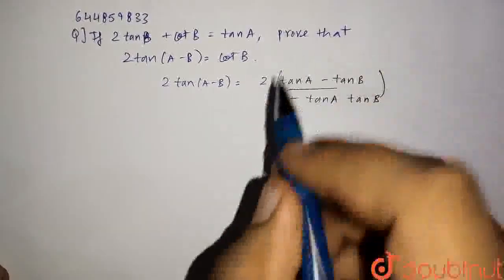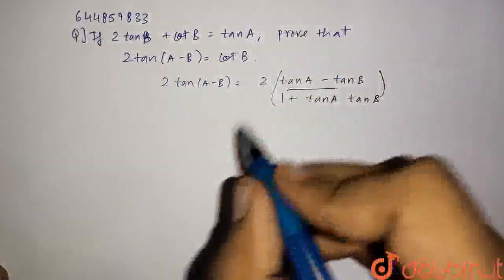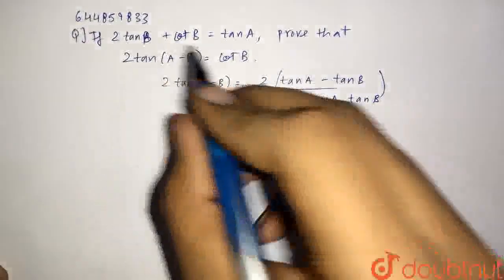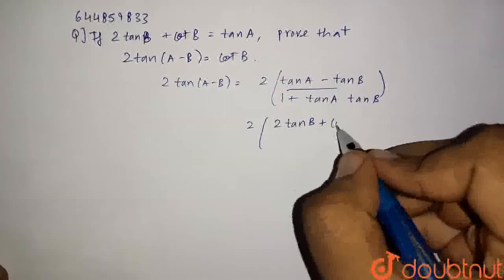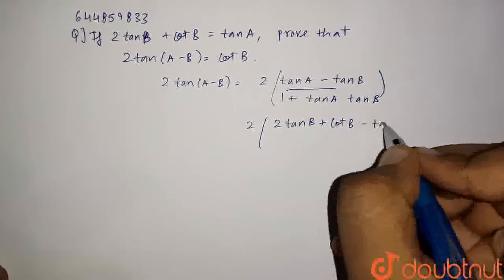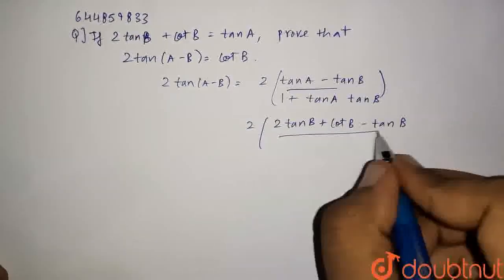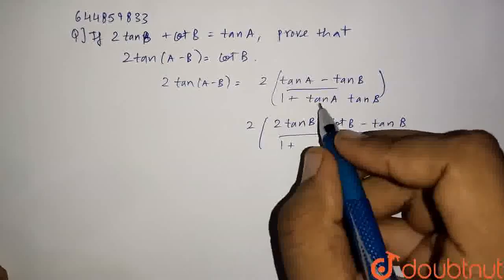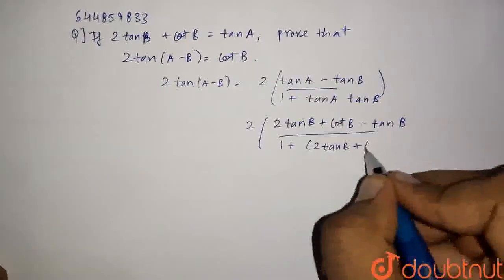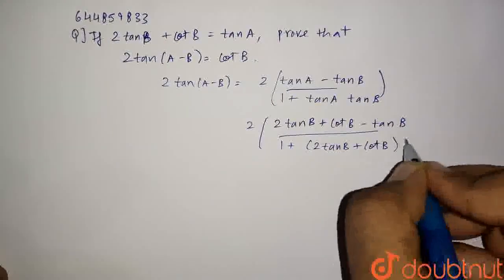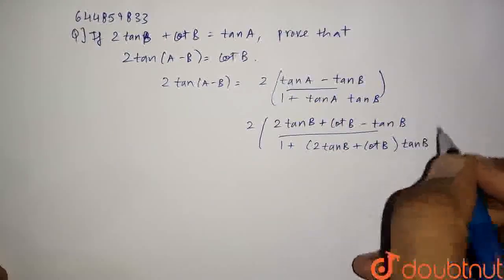Now I'll substitute the value of tan a as given in the question. It will be 2 into tan a is 2 tan b plus cot b, so 2 tan b plus cot b minus tan b whole upon 1 plus tan a is 2 tan b plus cot b into tan b.